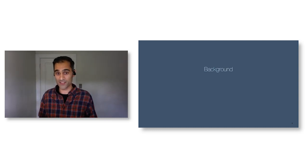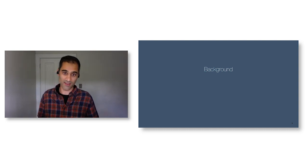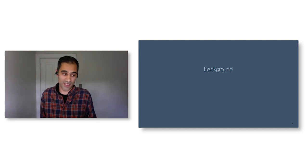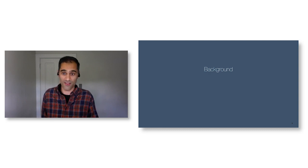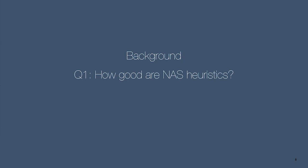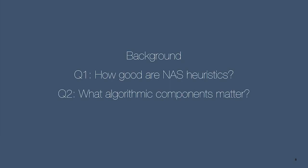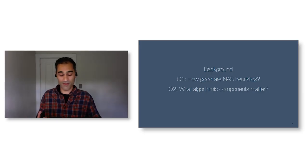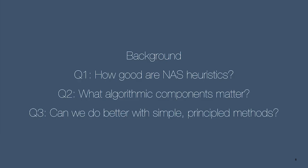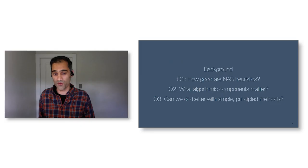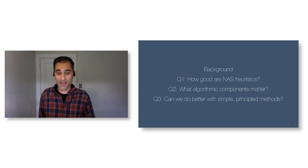In this talk, we'll cover neural architecture search from the ground up. I want to start by getting us all on the same page with background on the field, and then talk about my research where we ask fairly basic questions about the state of the art. The first question: how good are state-of-the-art NAS heuristics? The second: what algorithmic components really matter, assuming simpler is better? And finally, can we do better—come up with new, simpler, principled algorithmic heuristics that also perform well empirically?